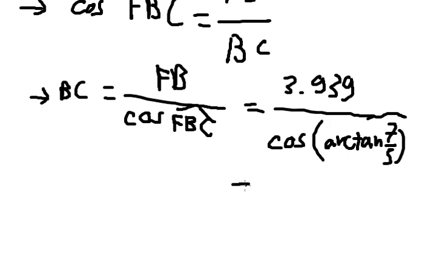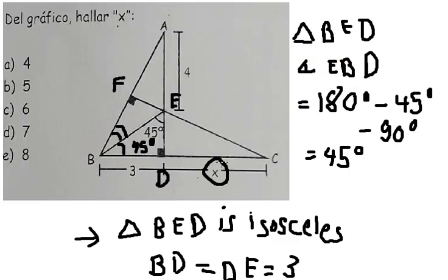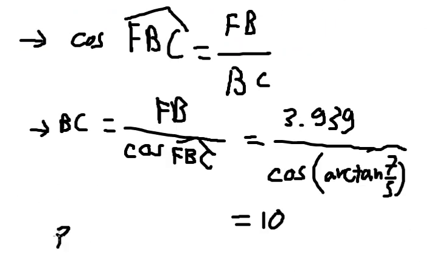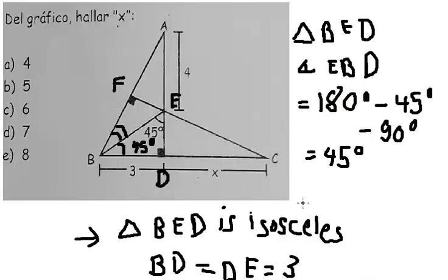We have number 10. The question asks us to find S, so we use BC minus BD. That is number 10 minus number 3, which gives us number 7. So we need to choose answer D. This is the end. Thank you for watching.